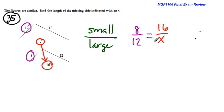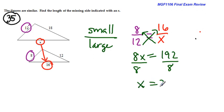We are now going to cross multiply to solve the proportion. We get 8X equals, take 12 and multiply it times 16 in your calculator. We get 192. Divide both sides by 8, and we get X equals 24.